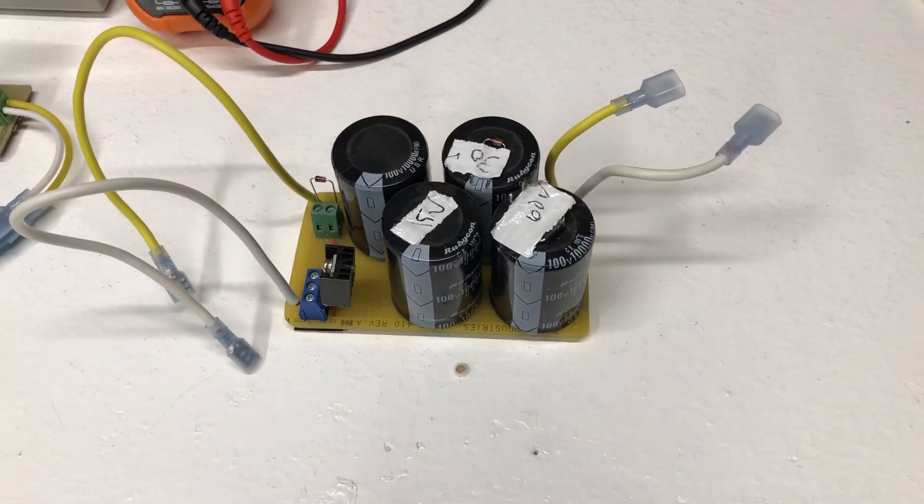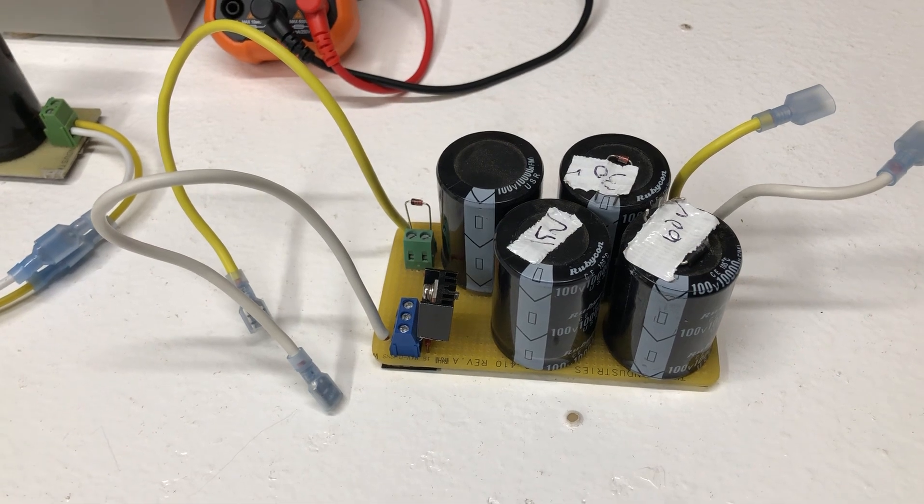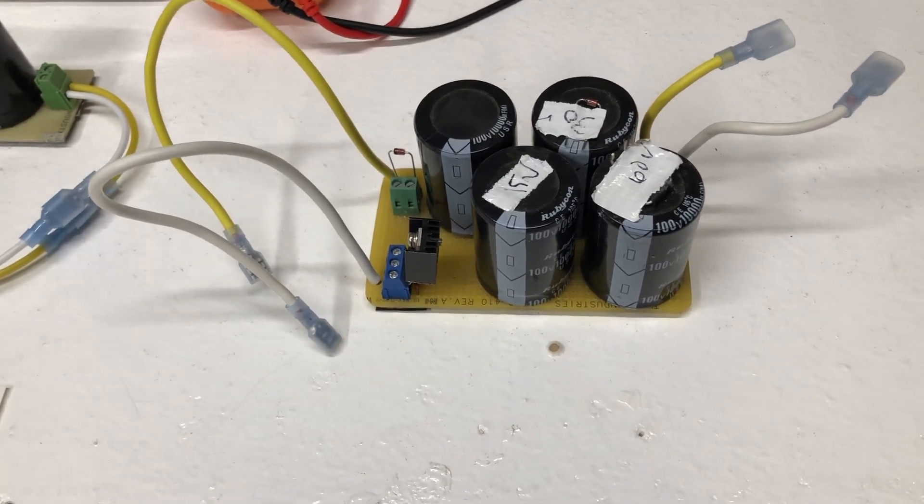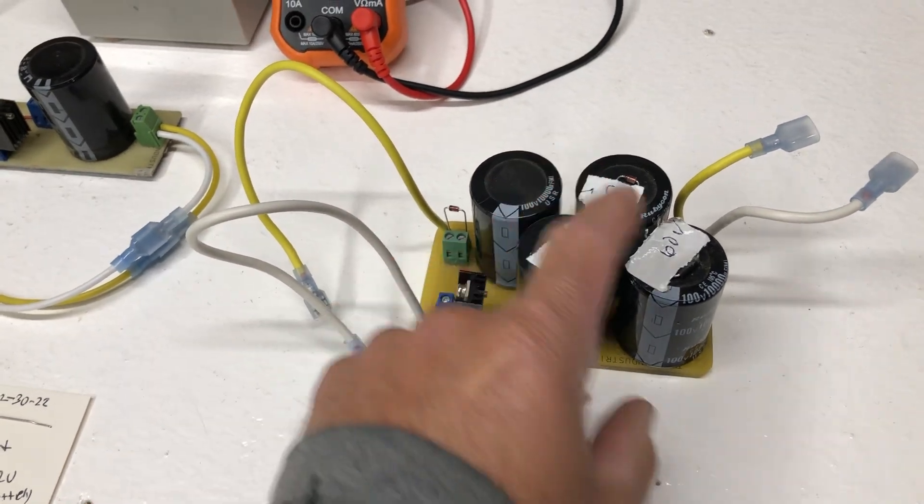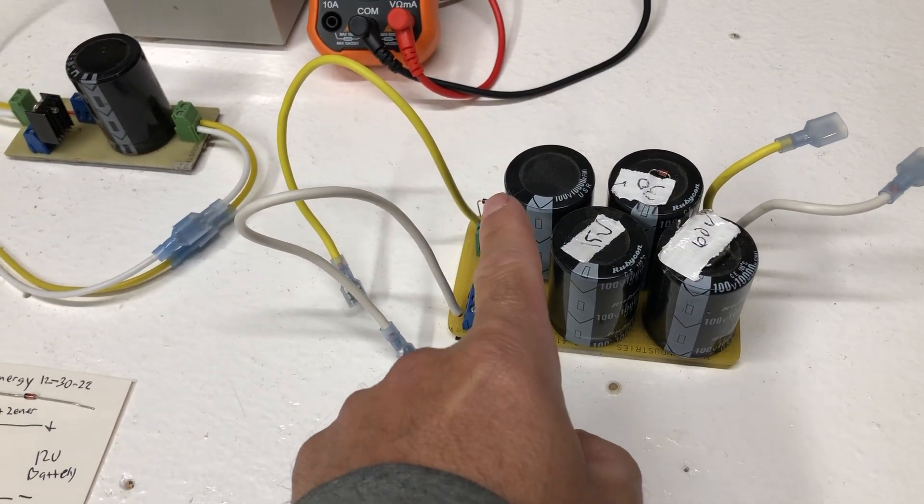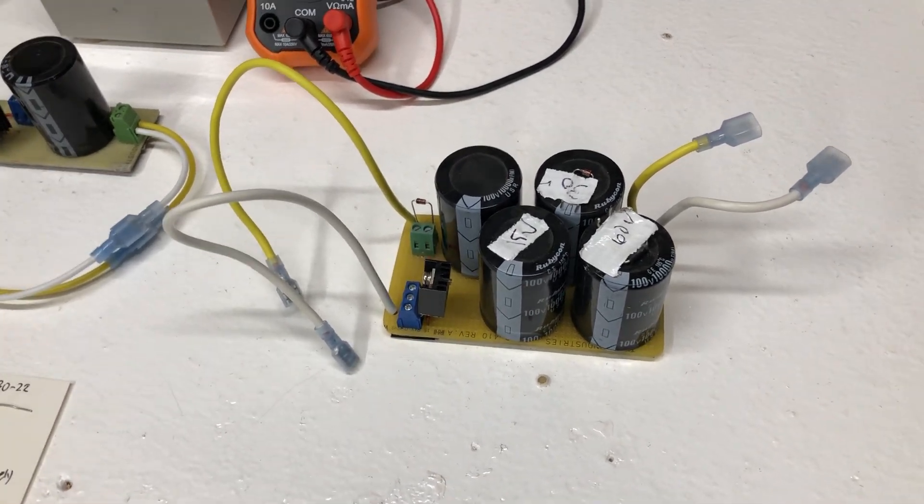This is another version right here. Same SCR and zener diode, but this one has higher voltage capacitors, so I could do 15 volts, 30 volts, 60 volts, just by changing out the zener diode. This one runs best for the 48-volt system.